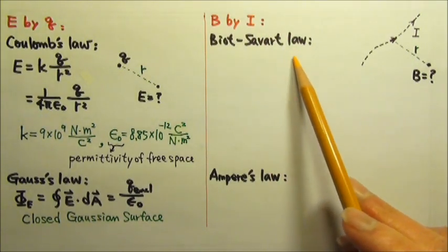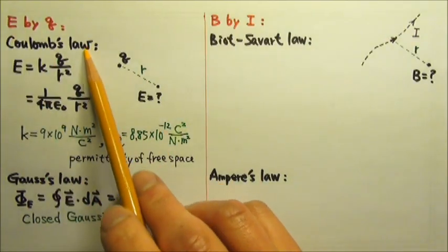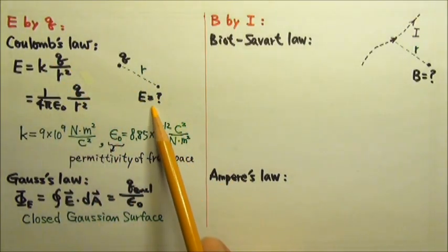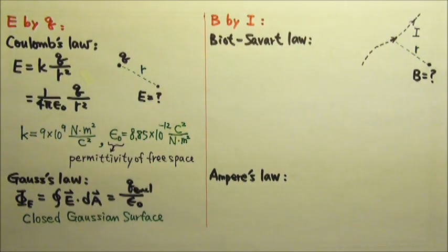There is Biot-Savart law. Just like Coulomb's law, it is for finding the field produced by a point source. Let's say this is our point current source. It is an extremely short segment of current. Suppose the current in this wire is I.